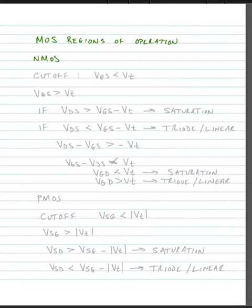We have the cutoff region that is defined as the gate-to-source voltage being less than the threshold voltage for the device. If the gate-to-source voltage is less than the threshold voltage, we're operating in cutoff.